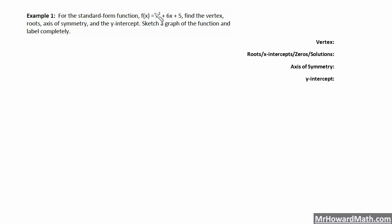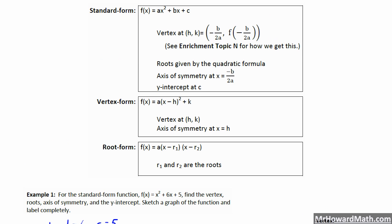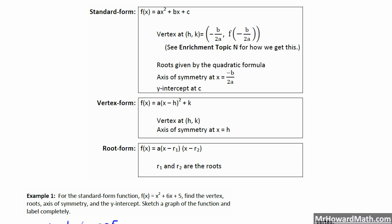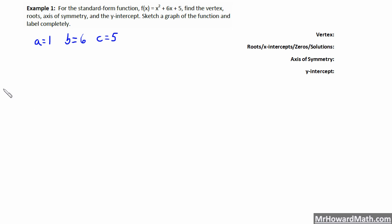When given a standard form, it's a good idea to label A, B, and C first. So A equals 1, B equals 6, and C equals 5. To find the vertex, remember it's given by H comma K. Our H value equals negative B over 2A, which is negative 6 over 2 times 1, which equals negative 3. So the X coordinate of our vertex is negative 3.